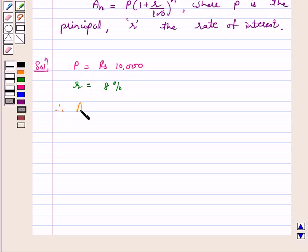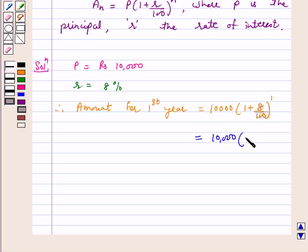amount for first year is equal to P that is 10,000 times (1 + r that is 8/100) raised to power 1, which is equal to 10,000 times (1 + 8/100).